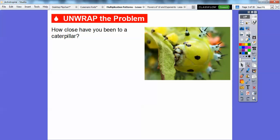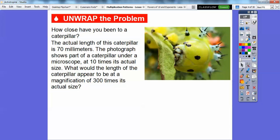Let's try a problem here. How close have you been to a caterpillar? Probably not this close right here, but everybody's seen caterpillars. The actual length of this caterpillar is about 70 millimeters. We'll talk about millimeters a little bit later. The photograph here shows part of a caterpillar under a microscope at 10 times its actual size.